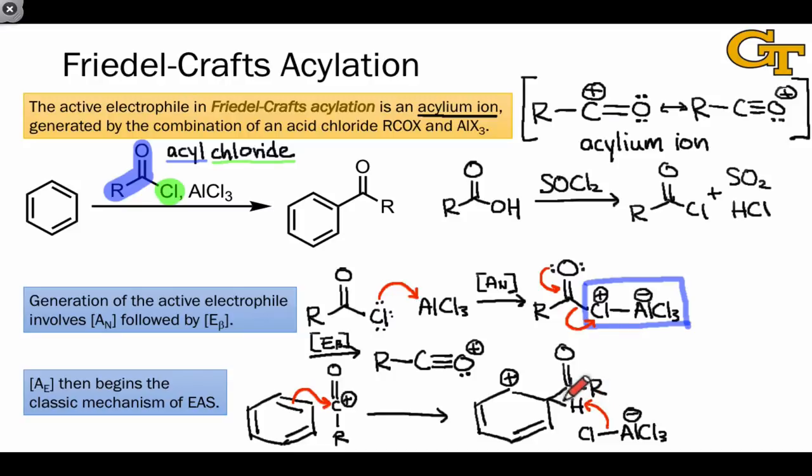Proton transfer to chlorine leads to the reestablishment of aromaticity as well as the production of HCl and AlCl3.